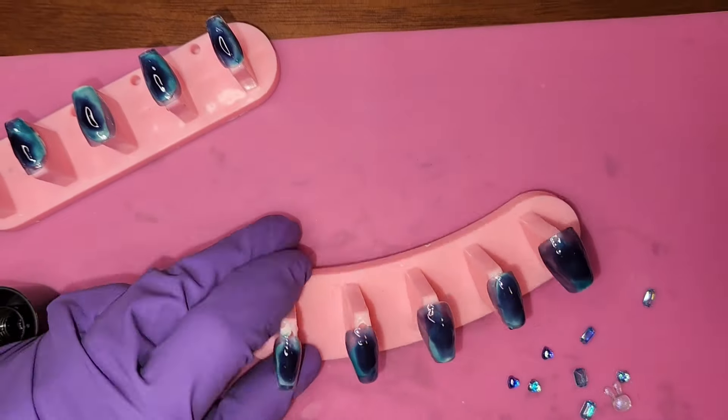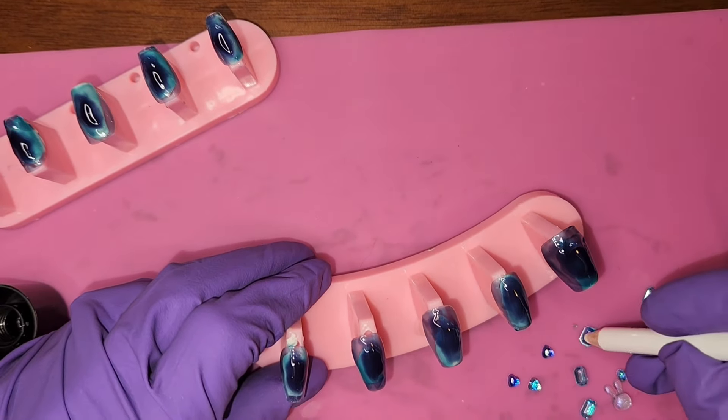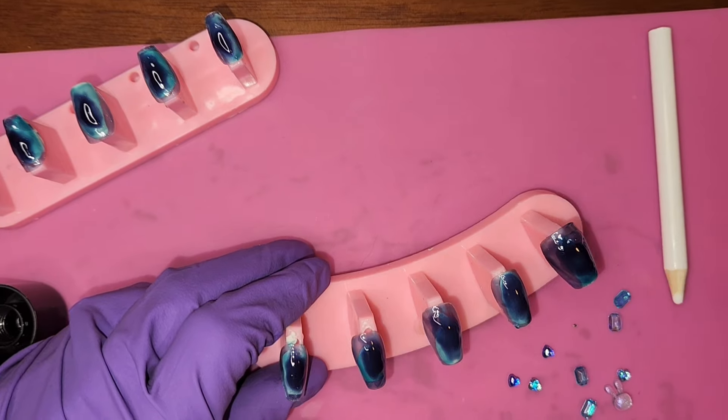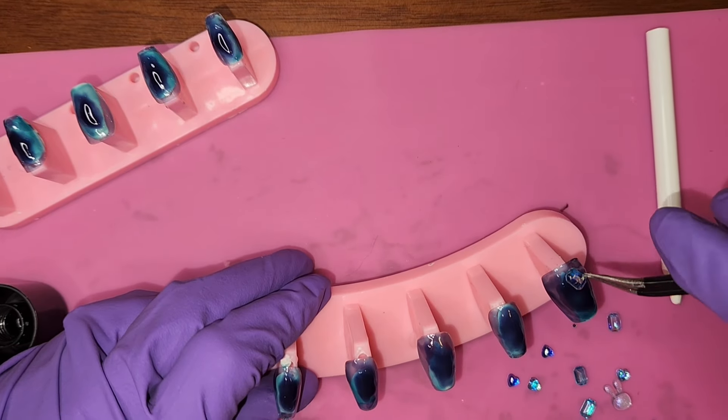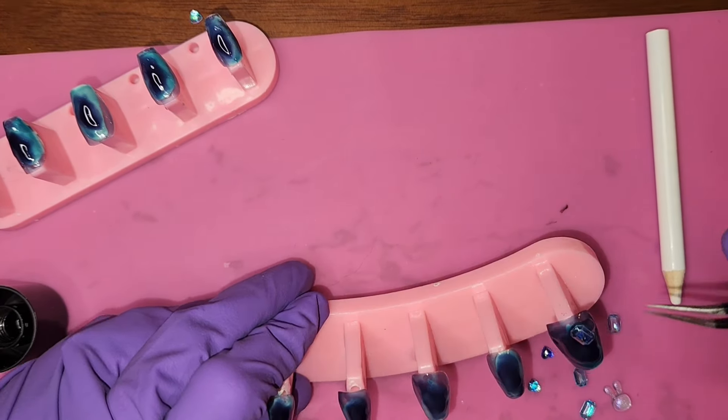I just picked out some random gems. I'm using my glue which is like a dupe for Mia Secret - I'm pretty sure I got that off of Shein. I'm adding like a little emerald-shaped blue diamond with a heart.